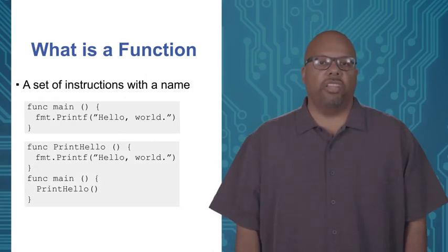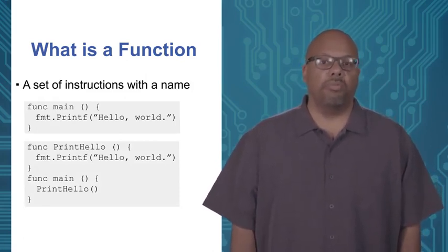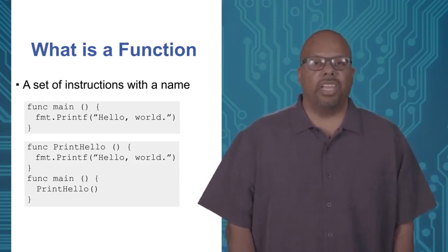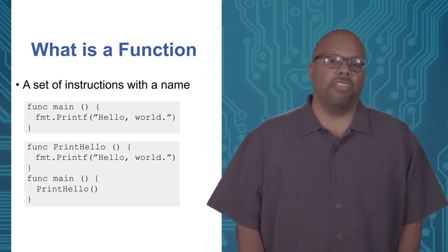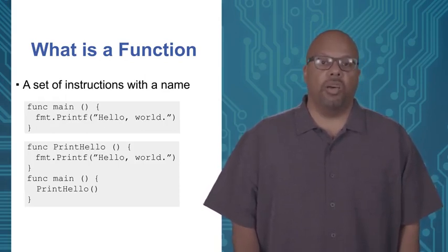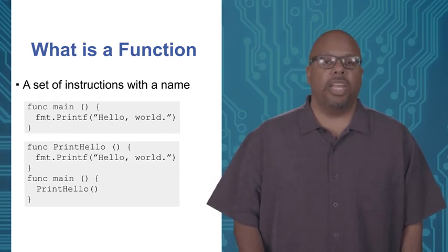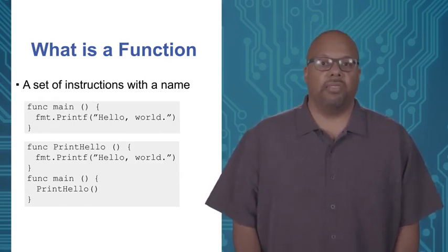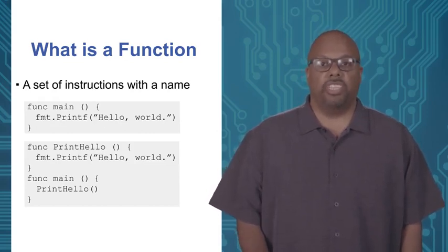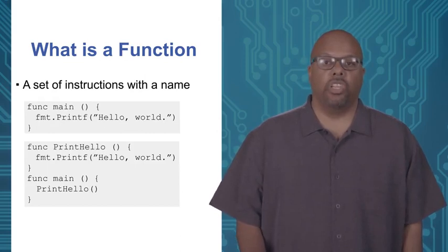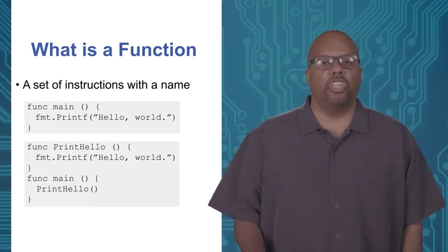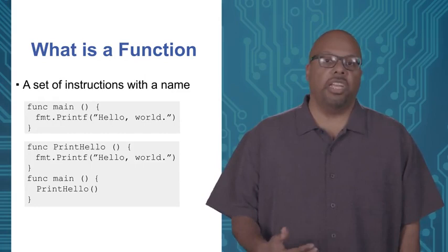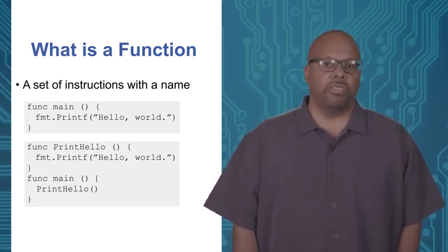Take a look at the example on the bottom. We have two functions: the top one is called printHello, and the bottom one is called main. If you look at main, all it has is one line — it calls printHello. That is a function call. At that point in execution, it'll go to printHello and execute whatever instructions printHello contains. PrintHello just has one instruction: print hello world. So the two programs do the same thing — the bottom one just has an explicit function call inside main.